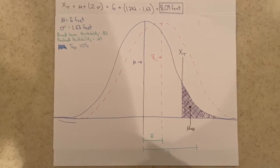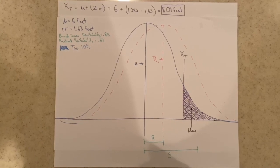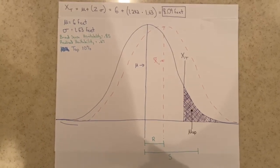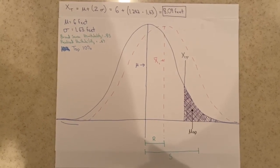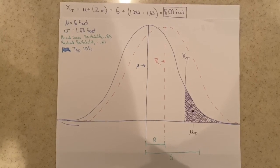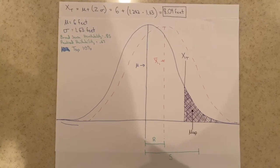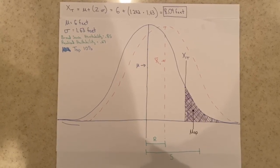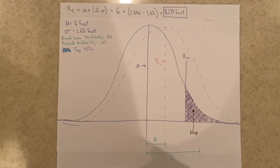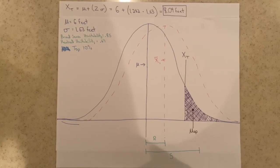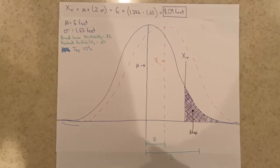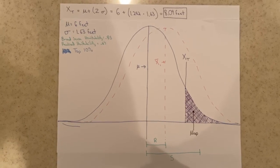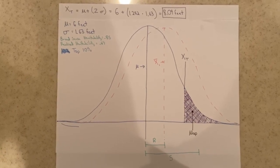With this information, we can now find the truncation point, which is the smallest feather length value that can be used in order to breed with the top 10% of parents. Taking the mean and adding it to the product of the standardized selection point value, or Z, from a given table and the standard deviation, we get a truncation point of 8.09 feet. Anything above this value will be considered a parent in the top 10% and would be ideal for breeding.